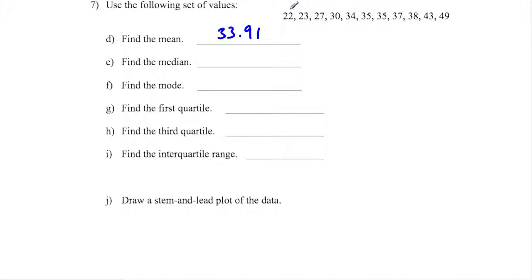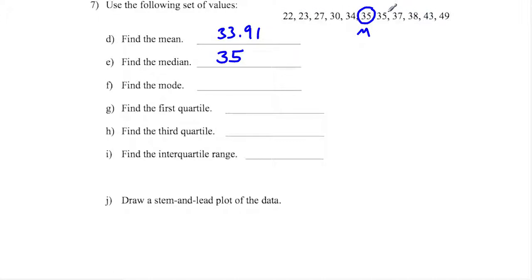The median is the middle number. There are 11 values, so if I count in 6, this value of 35 has five numbers to the left and five numbers to the right — that is the exact middle, so that is the median. The mode is the most frequently occurring number, and here you can see there are two values of 35, so 35 is also the mode.